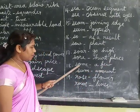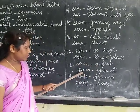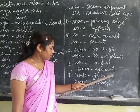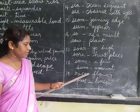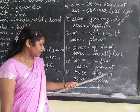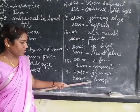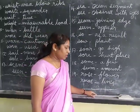Some — some means a few. Sum — sum means an amount. Rose — rose means a flower. Rose also means did rise.